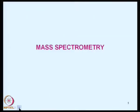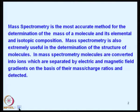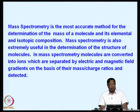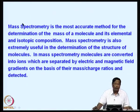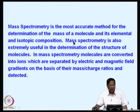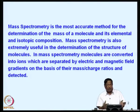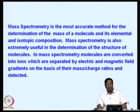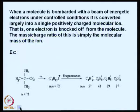Mass spectrometry is basically the most accurate technique for the determination of the mass of a molecule and its elemental and isotopic compositions. It is also extremely useful for the determination of the structure of molecules. In mass spectrometry, molecules are converted into ions, which are separated by electric and magnetic field gradients on the basis of their mass-to-charge ratio.